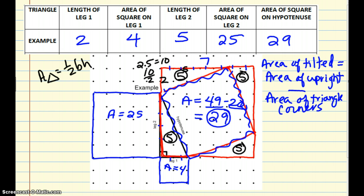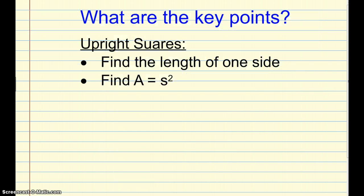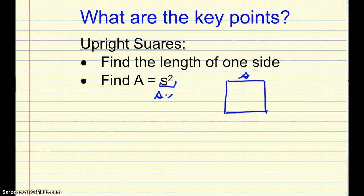Now let's quickly review and talk about the key points of finding the areas of these squares. For upright squares, those are the easy ones where it's easy to count the side length, either horizontally or vertically. We count the length of one side — I'll label this as S — and then we find the area by doing S squared, which is S times S. So the upright squares are quite a bit easier.